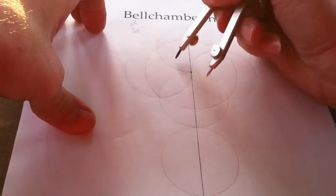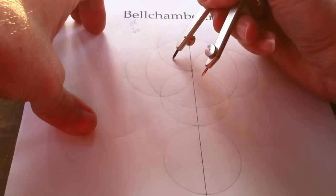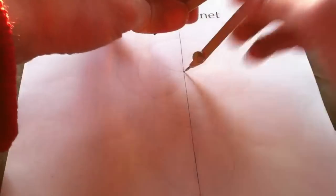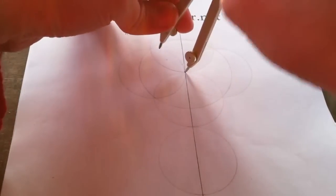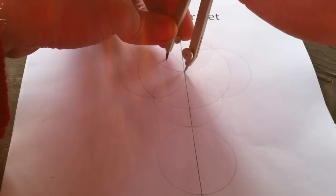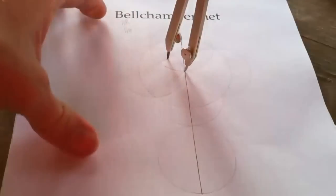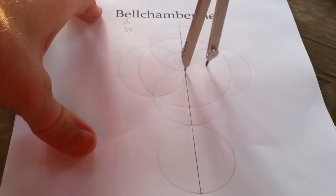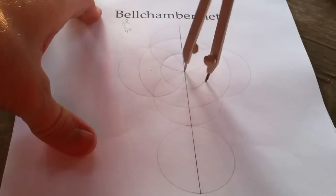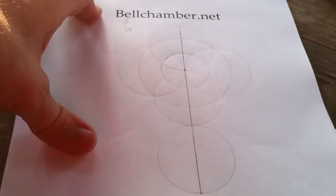This marquee shape right here, approximate where the center is gonna be and change your radius to that. This is gonna be the thickness of your arms of your cross. Mark another radius like so.